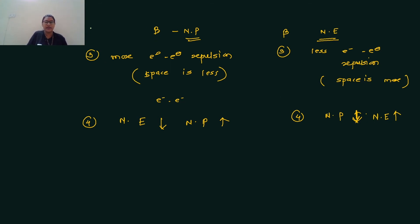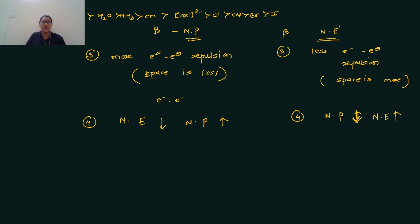The nephelauxetic parameter order is: F⁻ > H₂O > NH₃ > ethylenediamine > oxalate > Cl⁻ > CN⁻ > Br⁻ > I⁻.